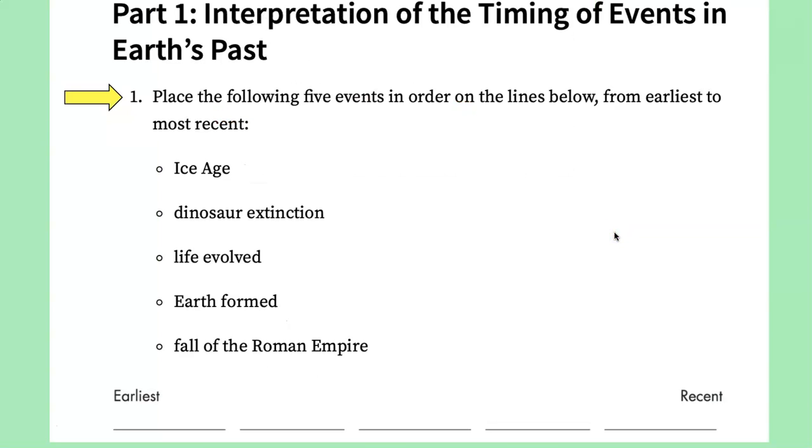Okay, so the first question says place the five events from earliest to most recent on the line below. So this would be Earth formed, life evolved, dinosaurs became extinct, the Ice Age occurred, and the fall of the Roman Empire would be the most recent.